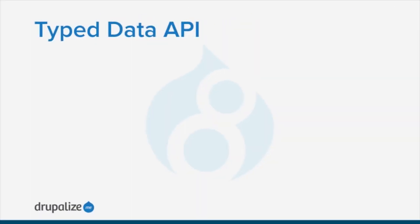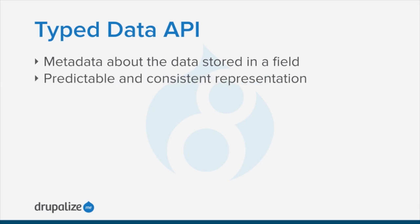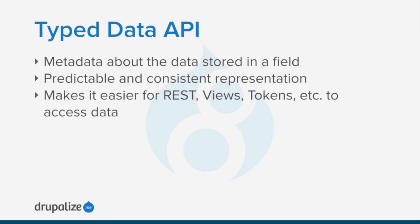Underneath the EntityField API is the new TypedData API. This introduces the ability to say that the value contained in this field is of a specific type — something PHP doesn't do very well on its own. Being able to perform introspection on a bit of data that you've just been given and infer that it is a string, or even a more complex type like a link, means you can create a lot of very generic tools that are smart enough to work with any field data they're provided. This makes things like creating a REST web service and serializing objects, or a token replacement system that just works without extra handholding, much easier. This will also make it easier for you to integrate your custom entity types with existing tools like Drupal 8's REST web service or Views without having to do additional work.